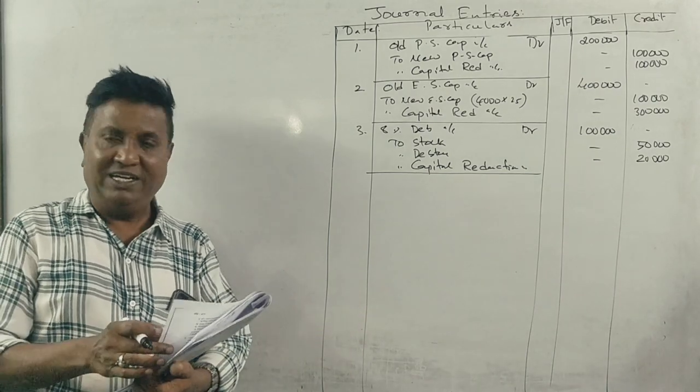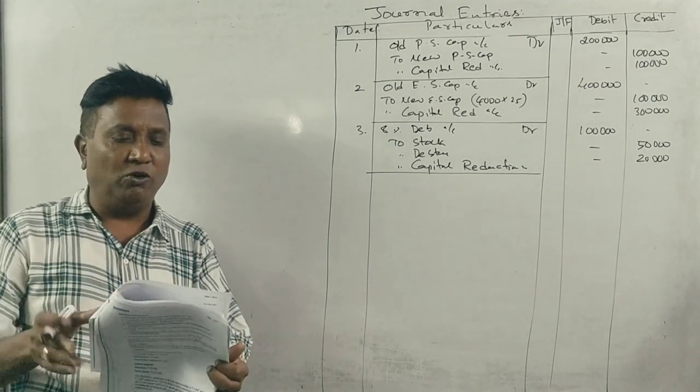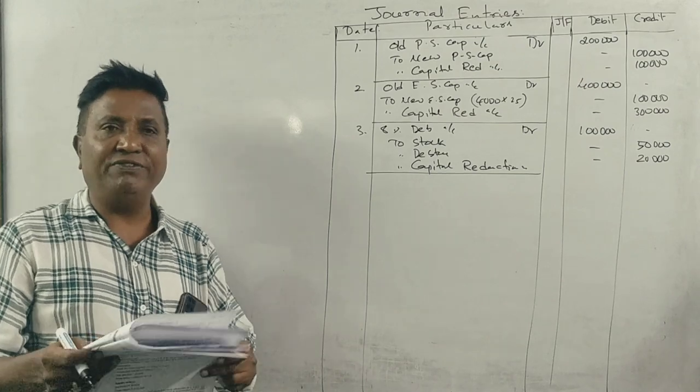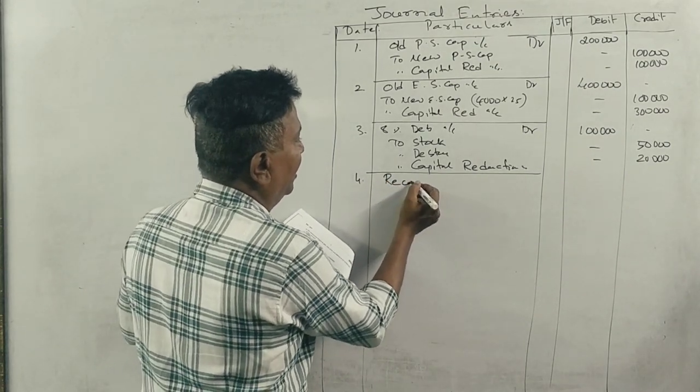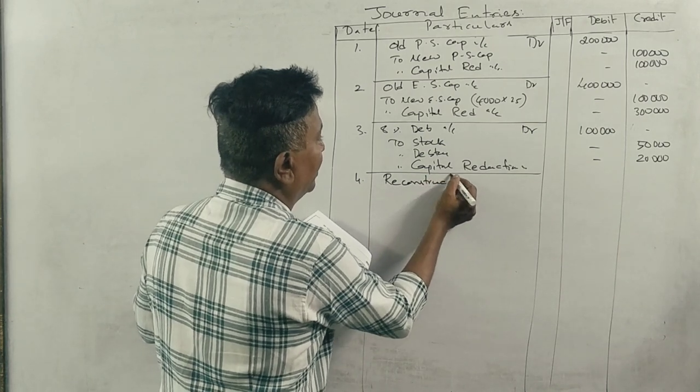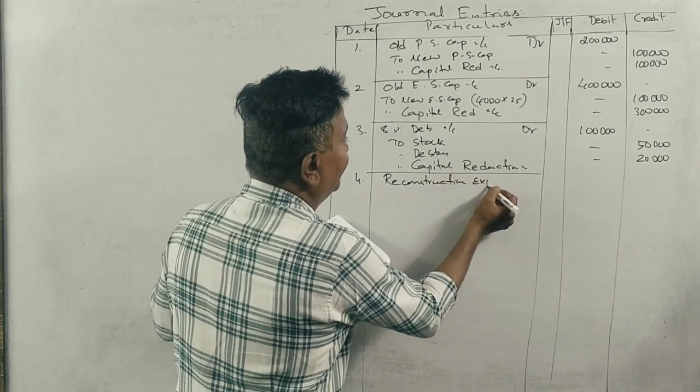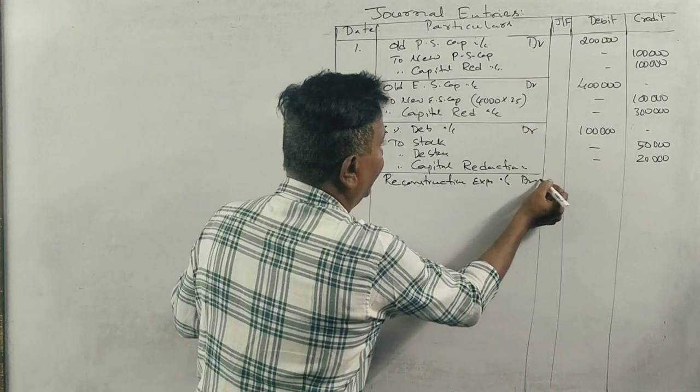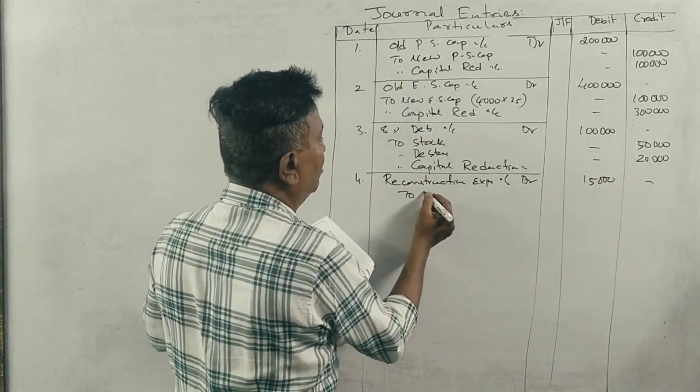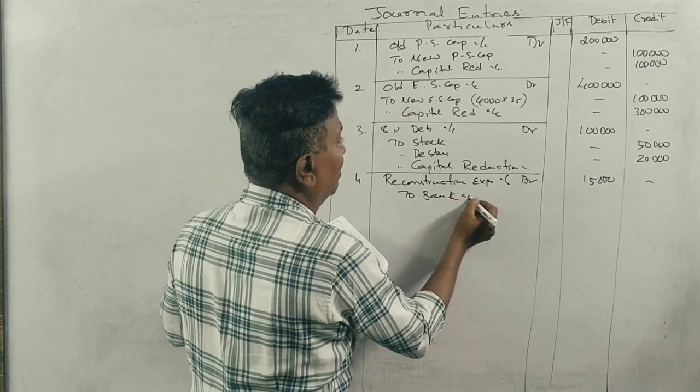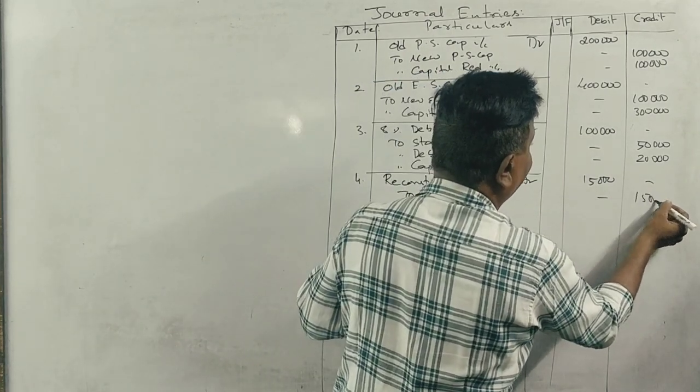Next adjustment: cost of reconstruction 15,000. The entry is: reconstruction expenses account debit 15,000 to bank account.